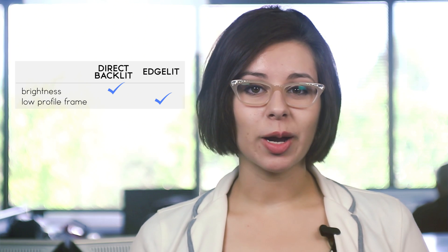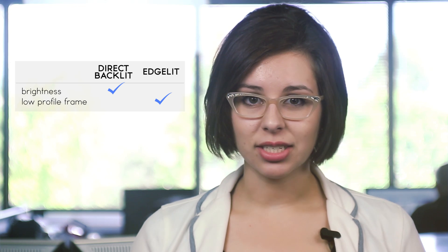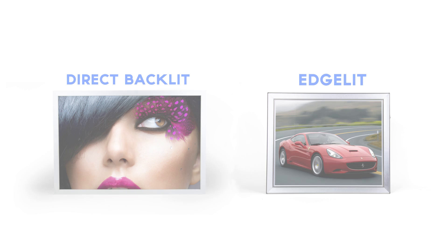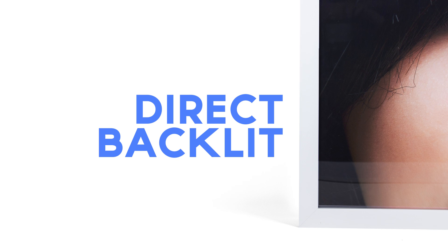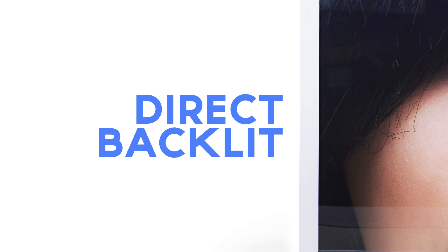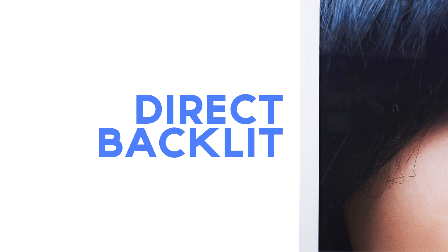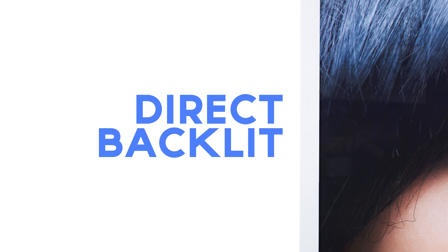The next consideration when comparing direct backlit and edge-lit light boxes is what we call uniformity of diffusion. Uniformity of diffusion is basically the question of how uniform or even the brightness or intensity of your light box is from one corner of the display to the other. A direct backlit light box will always have the potential to deliver better uniformity than an edge-lit one. Check out this direct backlit light box and notice how even the light intensity is spread over the entire face.